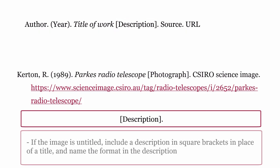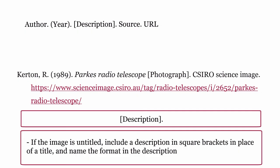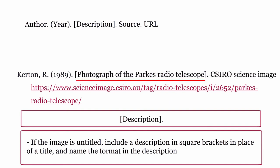If the image is untitled, include a description in square brackets in place of a title, and specify the medium in the description. For example, if this image did not have a title, the description might look like this: in square brackets, photograph of the Parkes radio telescope.